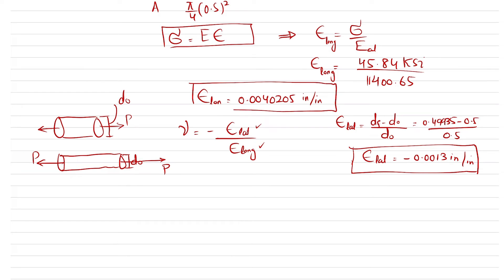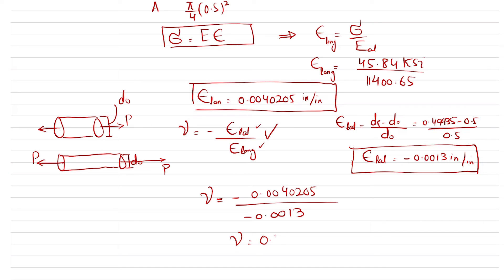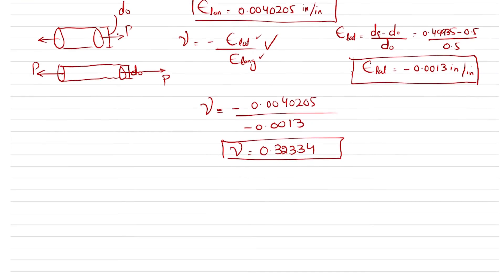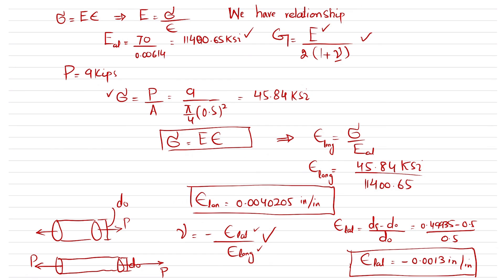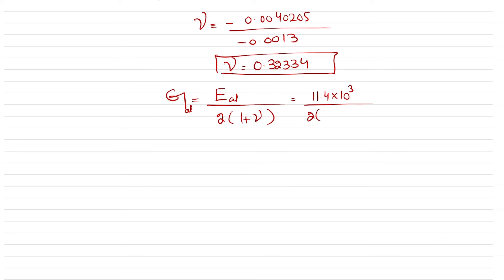Now we can find Poisson's ratio. ν = −(lateral strain) / (longitudinal strain) = −(−0.0013) / 0.004205 ≈ 0.3259. With this Poisson's ratio, we substitute into the formula: G = E / [2(1 + ν)] = 11,400.65 / [2(1 + 0.3259)].